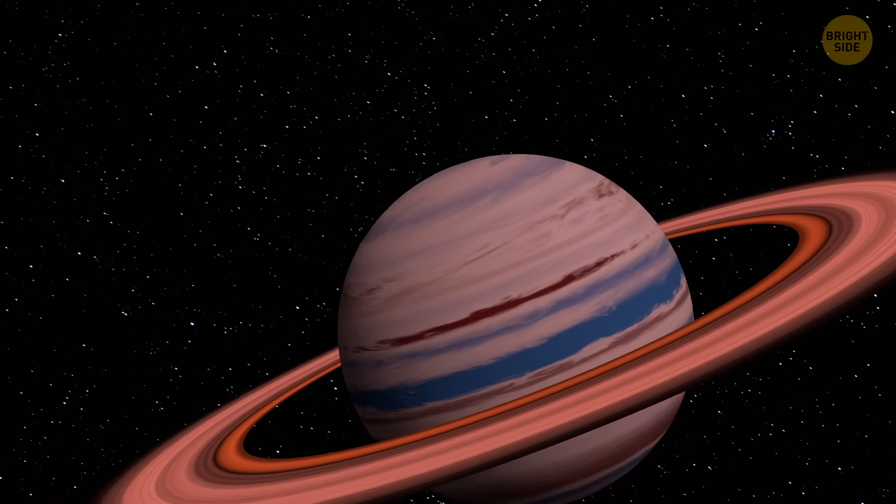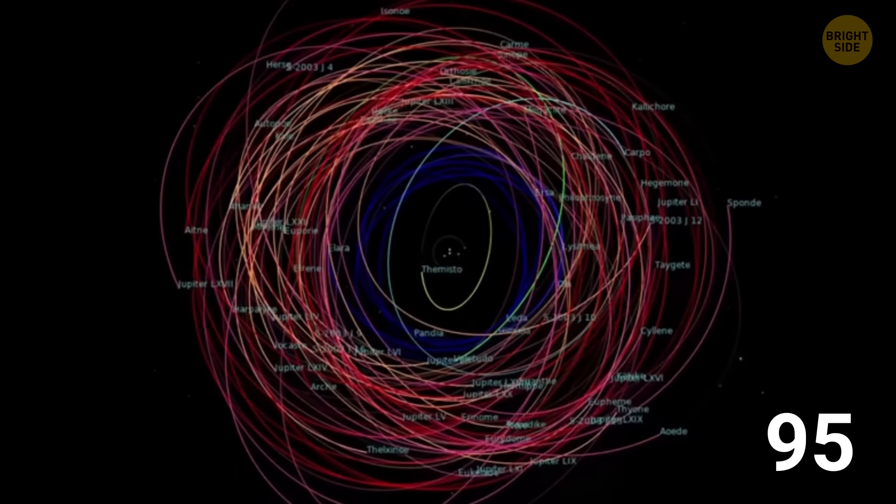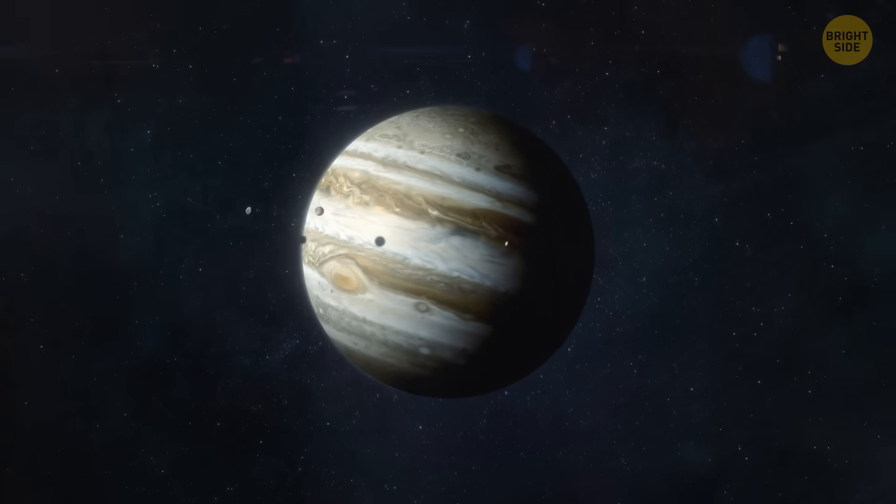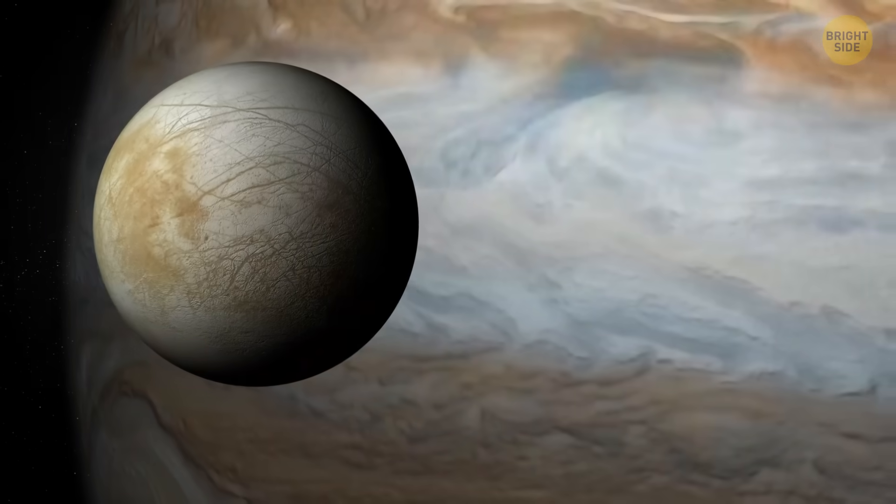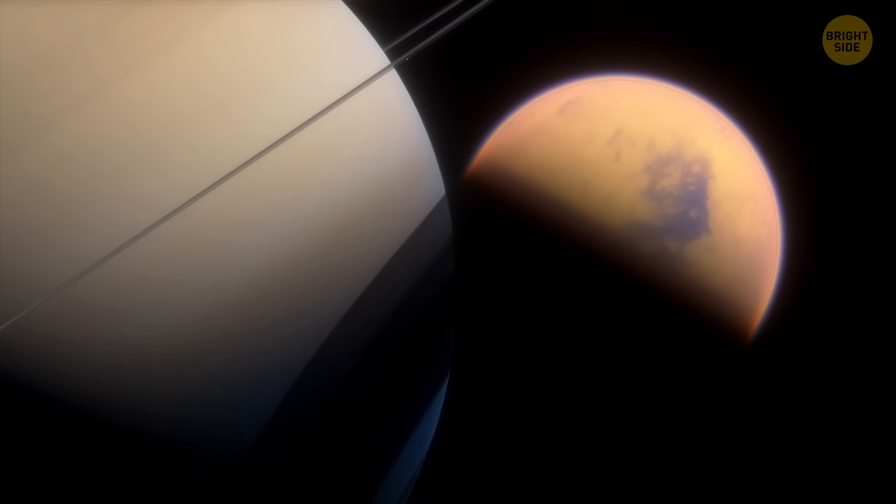But here's the plot twist: gas giants often come with moons. Jupiter's got 95, Saturn's got more than 140. And some of those moons are fascinating places for life. Europa with its underground ocean. Titan with lakes of methane.